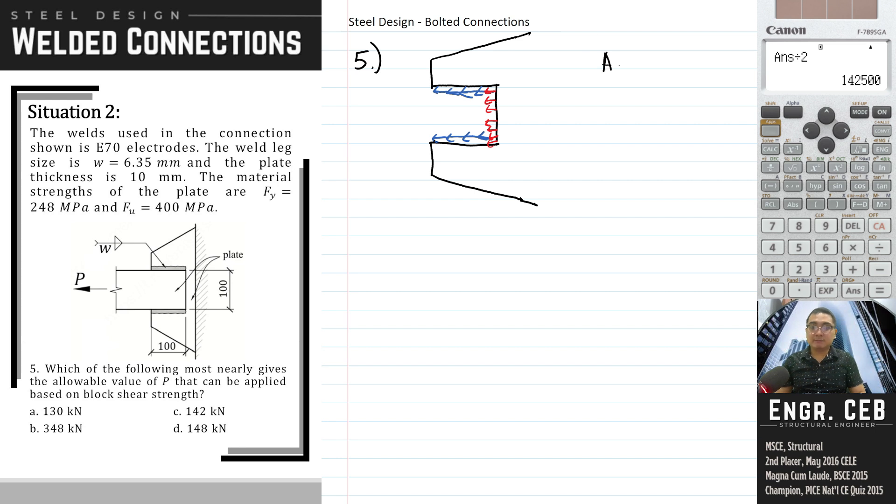First is A sub GV. So the dimension is 100 for shear, we just multiply that by 10 because the thickness of the plate is 10 millimeters. Times 2 because there are two shear areas. So this is 2,000 millimeters squared. And that's also the value of A sub NV because there are no holes when welded. And then A sub NT, that is 100 times 10.